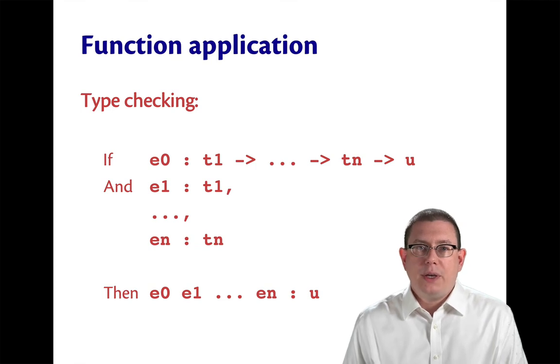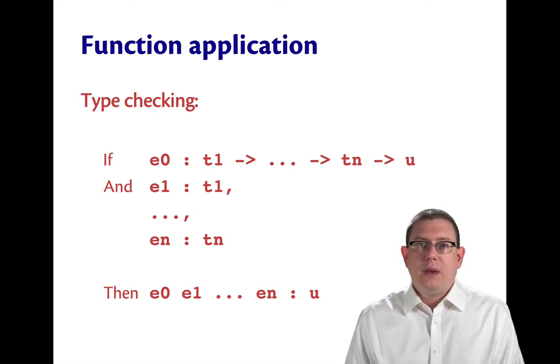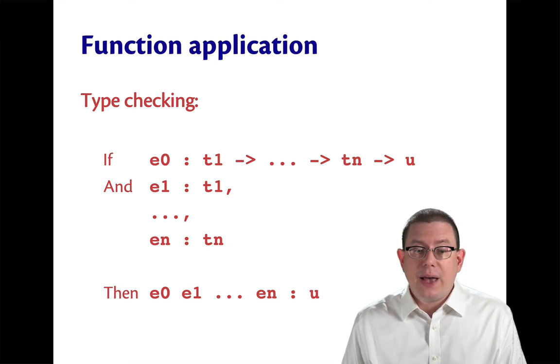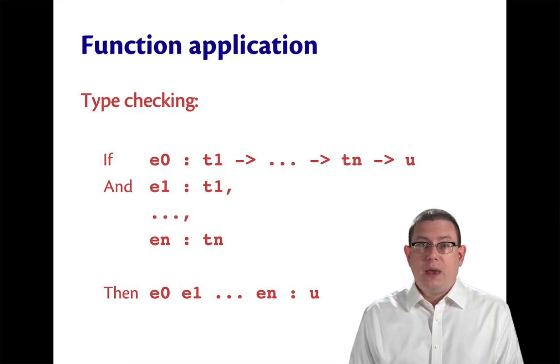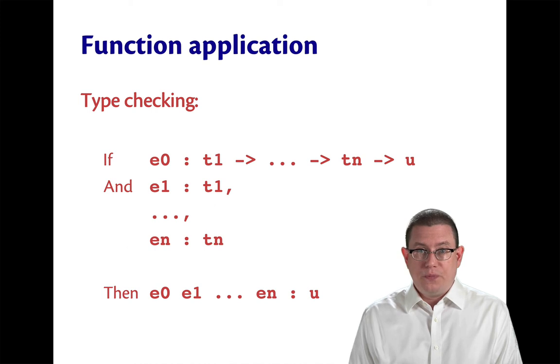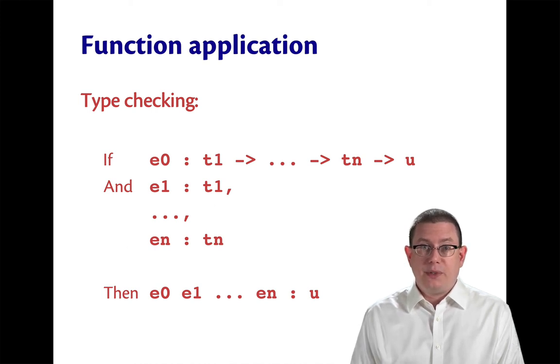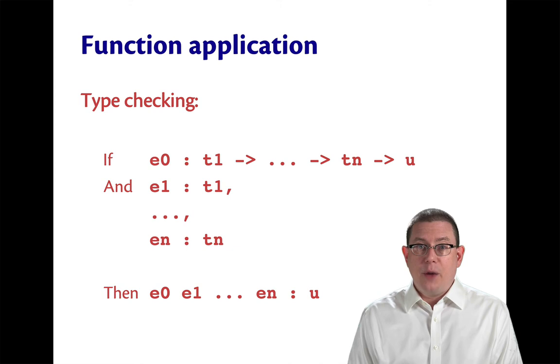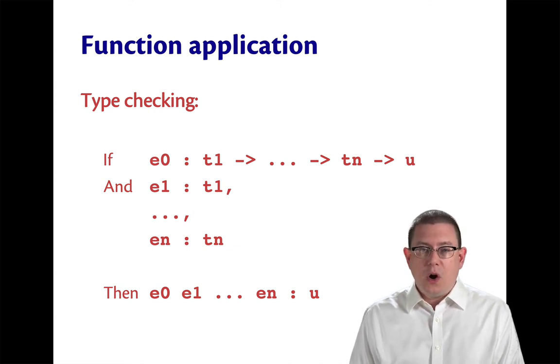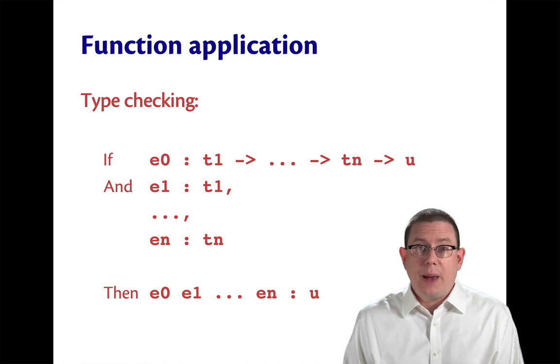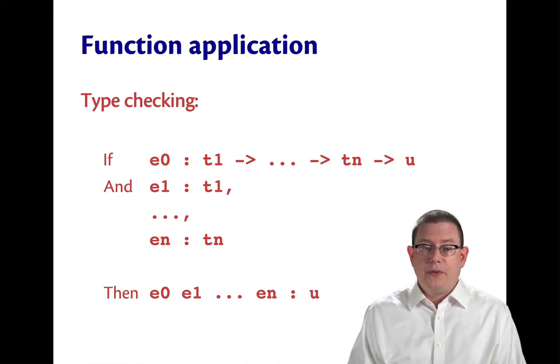Function application is very similar. If the function being applied, which of course could be an expression e0, if that expression e0 has a type t1, arrow dot dot dot, arrow tn, arrow u, which is to say it has arguments of types 1 through n, t1 through tn, and an output type of u, and if furthermore each of the argument expressions has the right type according to the function's type, then the result of the entire function application will be the output type of the function.